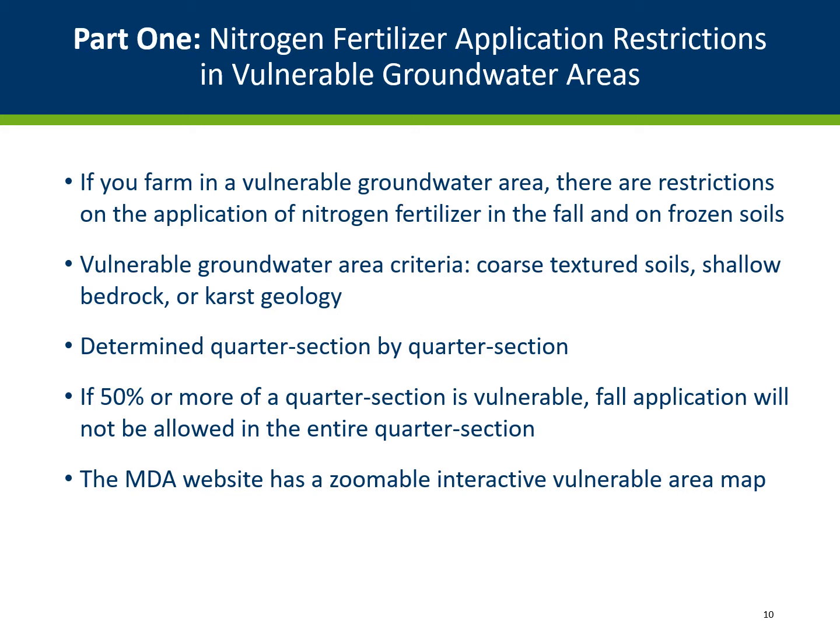If you farm in a vulnerable groundwater area, there are restrictions on the application of nitrogen fertilizer in the fall and on frozen soils. Vulnerable groundwater criteria include coarse textured soils, soils with shallow bedrock, or karst geology. These are determined quarter section by quarter section, so that if more than 50% of a quarter section is vulnerable, fall application will not be allowed in the entire quarter section. If less than 50% of a quarter section is vulnerable, fall application is allowed in the entire quarter section. The MDA website has a zoomable, interactive vulnerable groundwater area map.